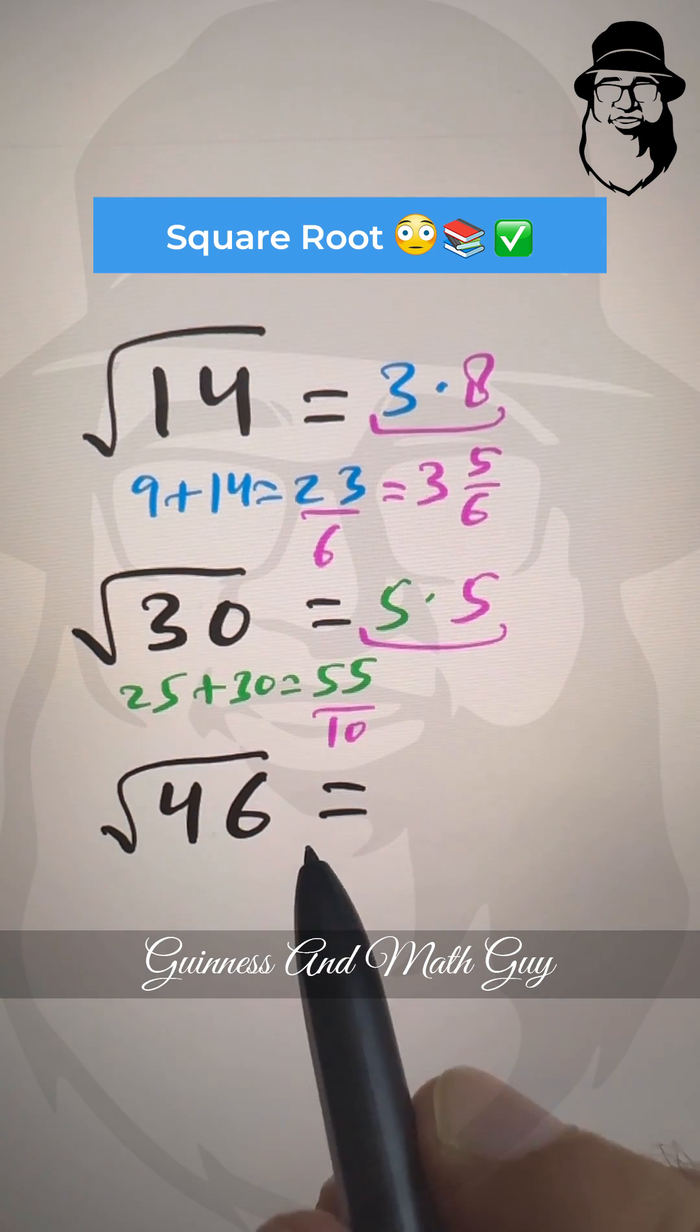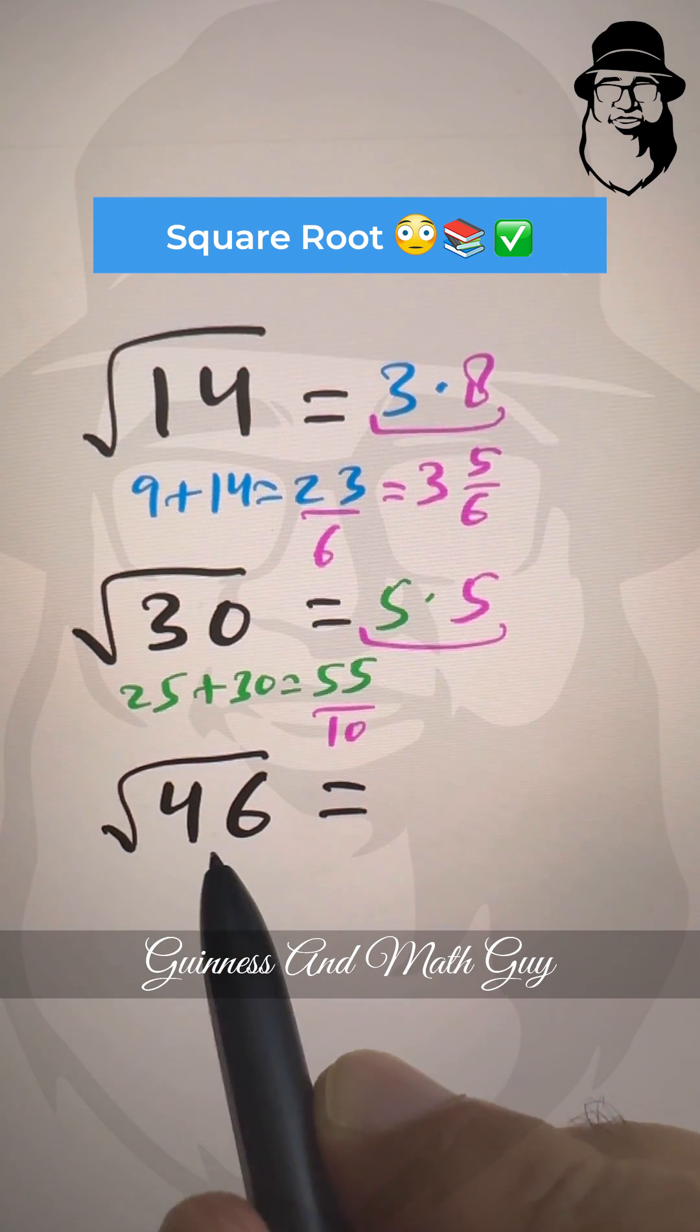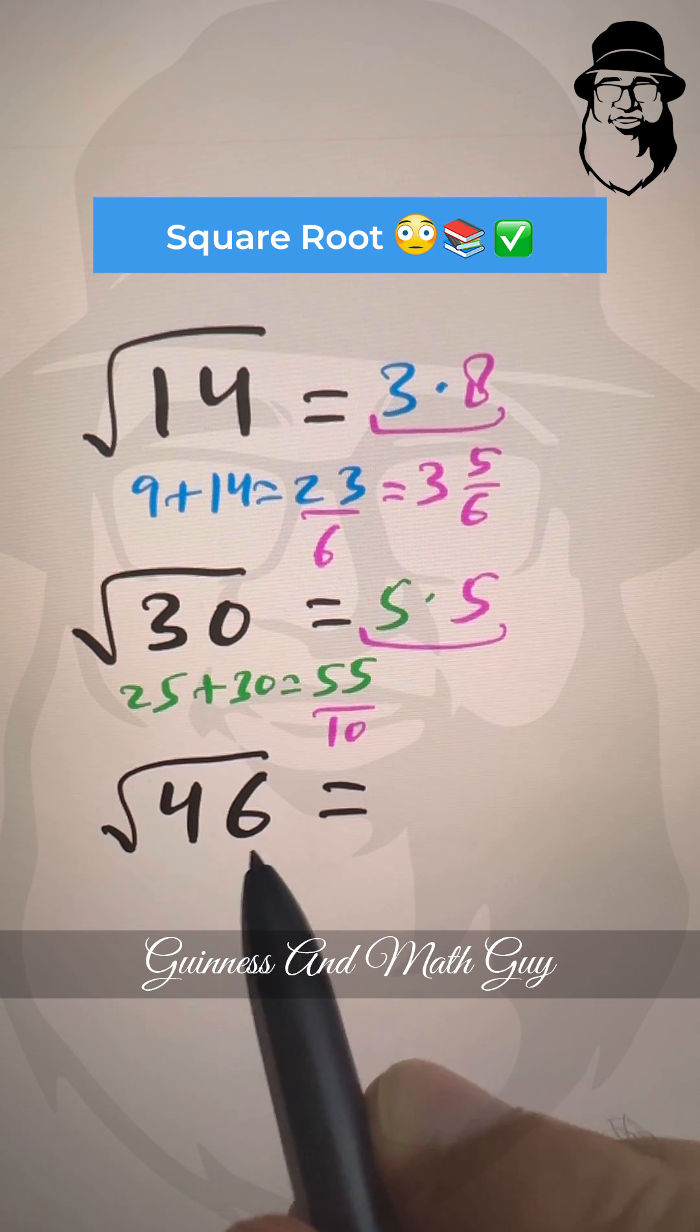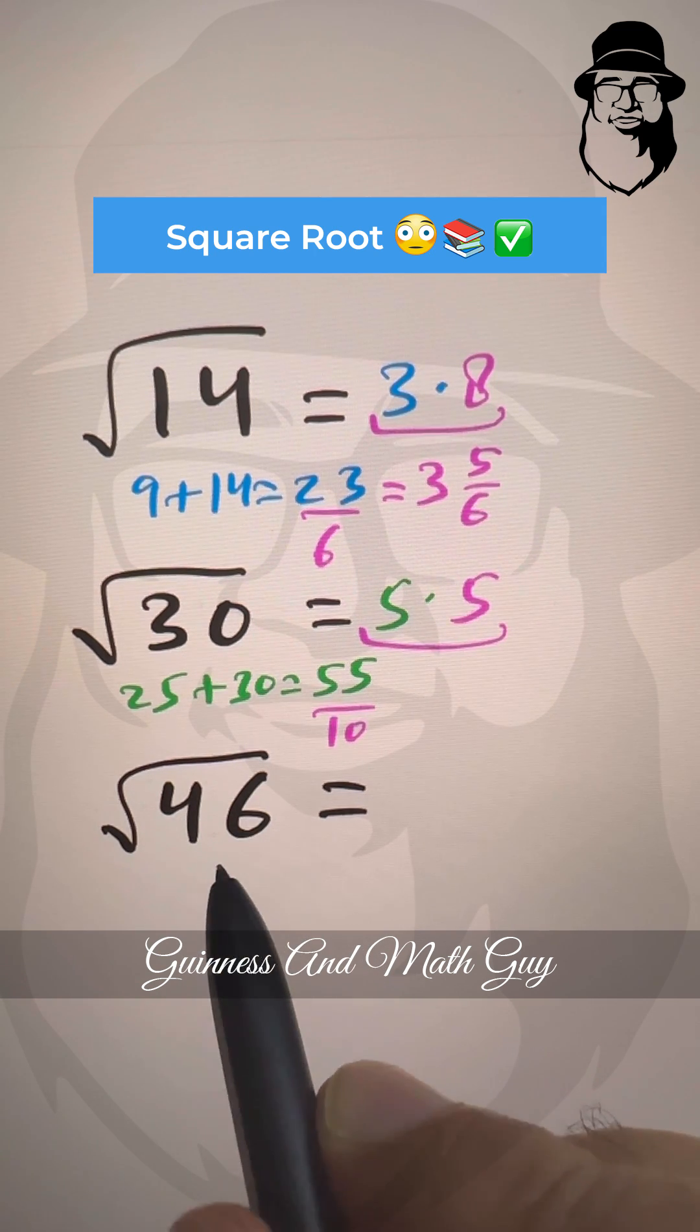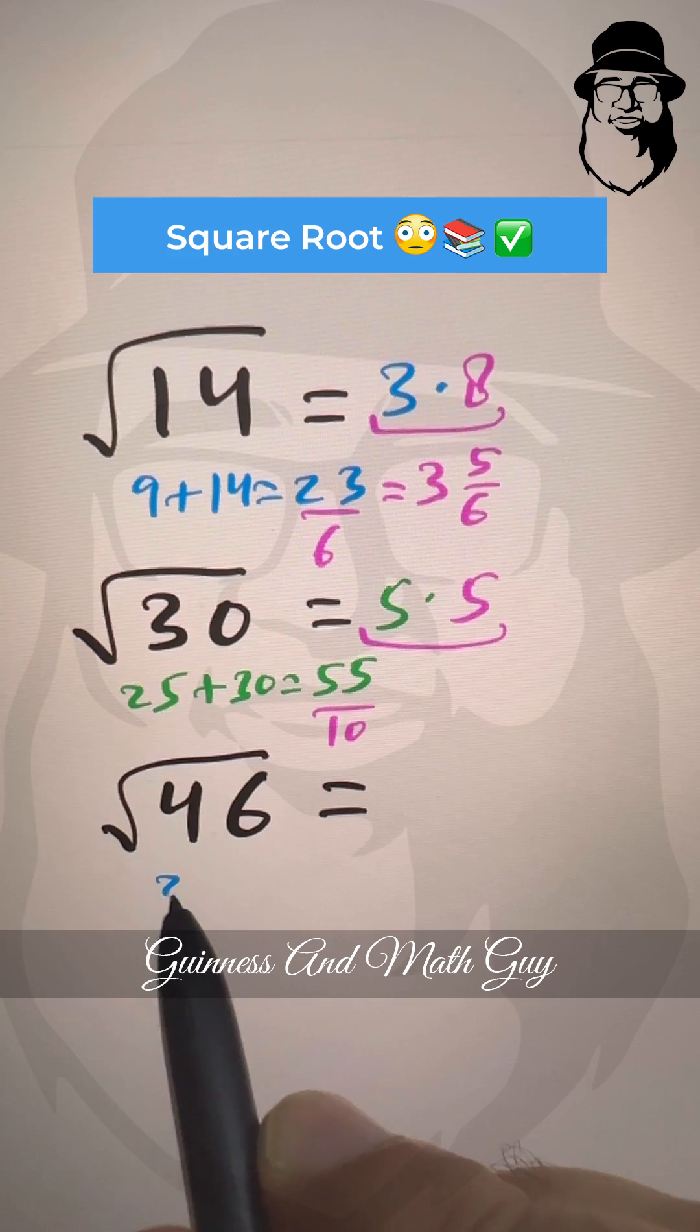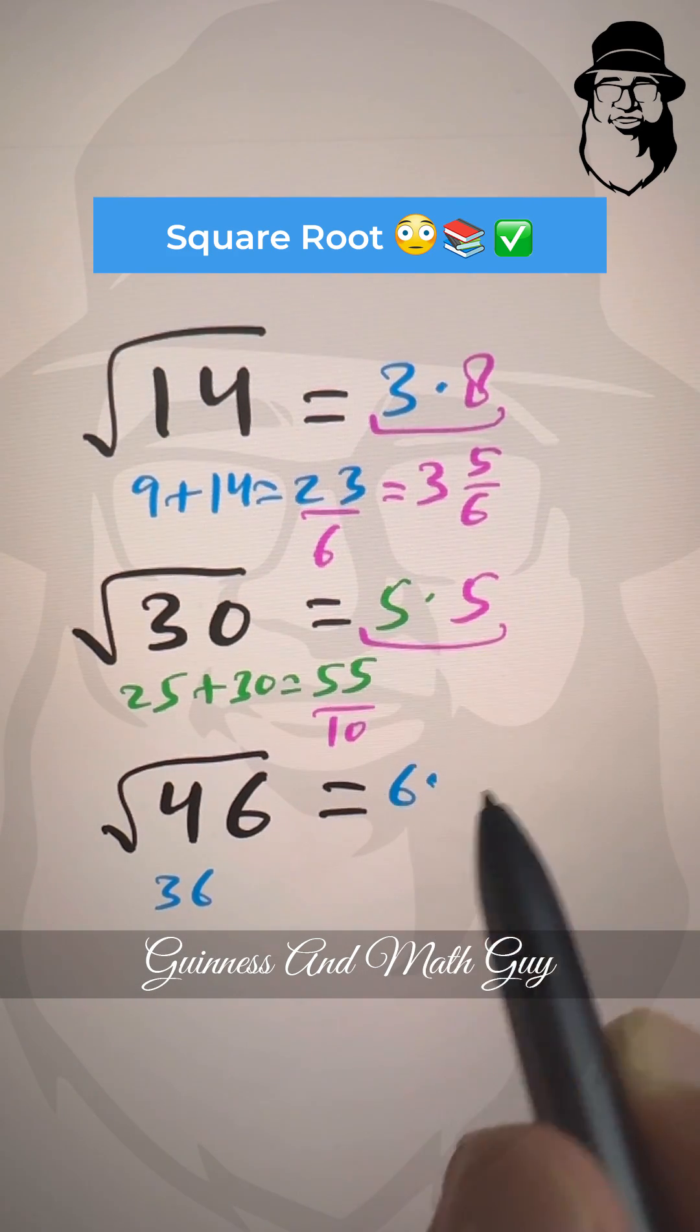Okay, so let's do this third one. 6 squared is 36. 7 squared is 49, above 46. So we'll take 6 squared, that is 36. Our answer will be 6 point something.